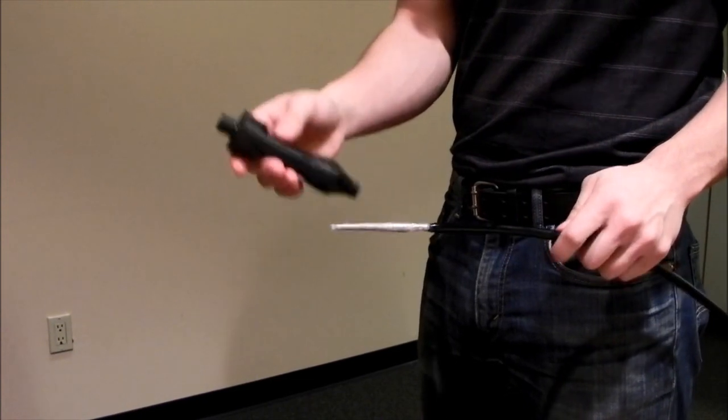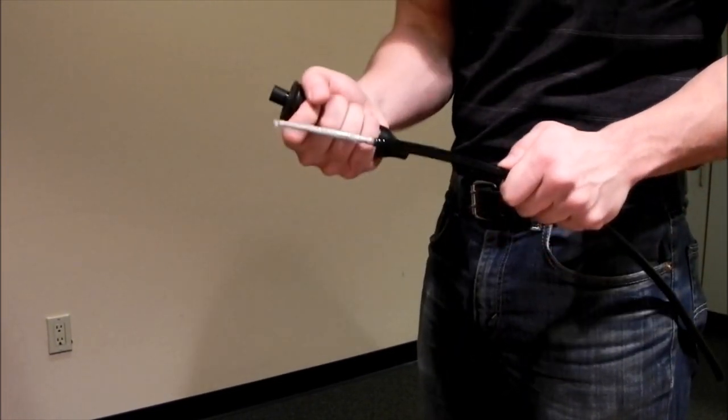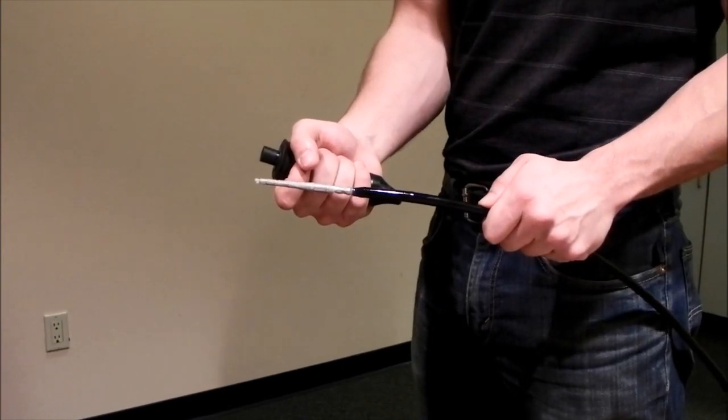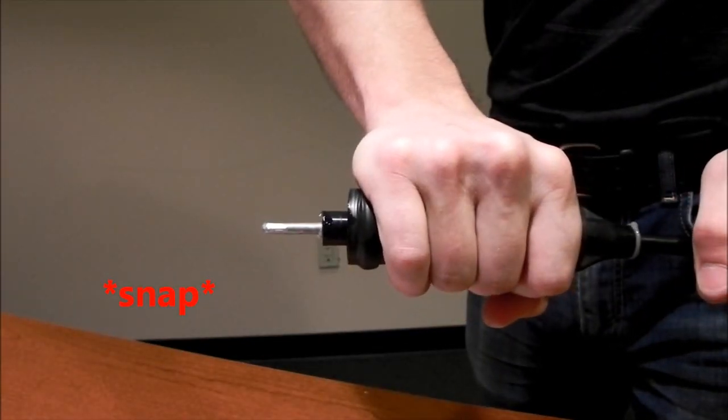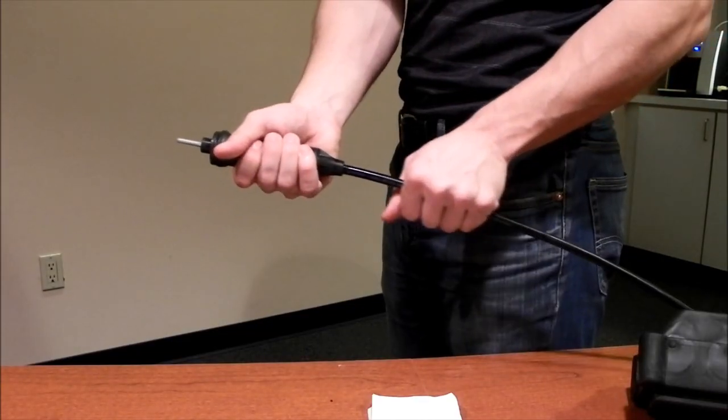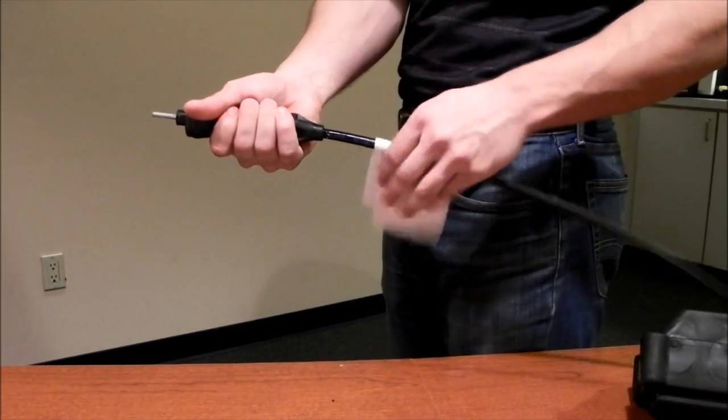Once sufficiently lubricated, insert the contact fast and hard in one complete motion until a snap sound is heard. If your hand slips on the cable, you can use the included towel wipe to get a firmer grip.